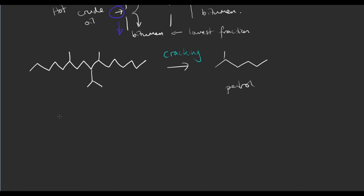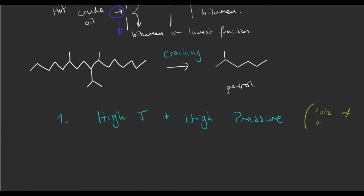Cracking can take place in two ways. It can take place at high temperature and high pressure — where we would put the liquid under pressure and then heat it up. This gives a lot of alkenes, which is another functional group we'll look at later. Alkenes are just like alkanes but with a double bond in them — so on the skeletal formula I've added a double bond.